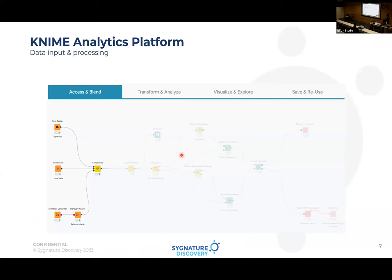In the KNIME Analytics Platform, you can access and blend data using Excel Reader, CSV Reader, Snowflake Connector, or DB Query Reader. The common pattern is that orange nodes pull in or read data, and then you have a yellow Concatenate node to join data from multiple sources — Excel, CSV, Snowflake, AWS, SQL — in a single node, defining which columns match and how duplicates are managed.